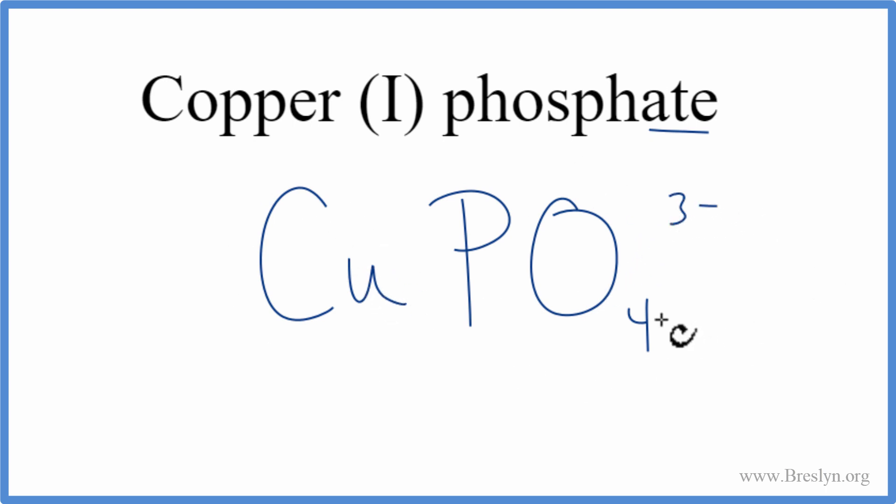So copper is a metal, and the phosphate, that's a group of non-metals. So the metal and the non-metals, that means we have an ionic compound, and we need to take the charge into account on the copper, and then we know the phosphate's 3-.